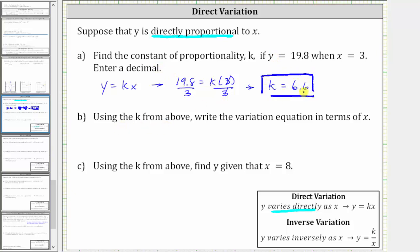Part B, using the k from above, write the variation equation in terms of x. Well, we know our direct variation equation is y equals k times x, but now we know that k is 6.6, which means the variation equation, or direct variation equation, is y equals 6.6 times x.